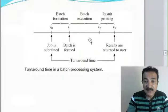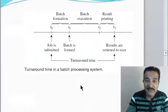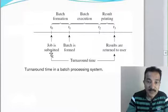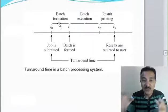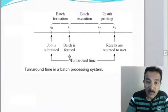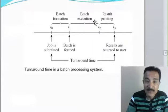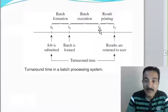Here is one more diagram to explain the same thing. All the jobs are accumulated and submitted, batches are formed, and the formed batches are given for execution from time t1 to t2. From time t2 to t3, all the results are printed.